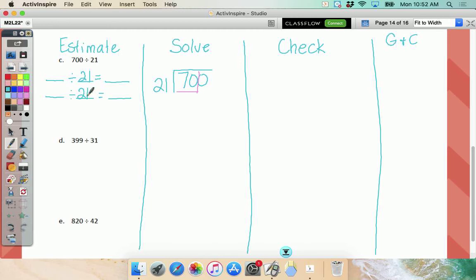I know I'm going to need two of these. You know how I know it? Because I put a box around the first two numbers, so I know I'm bringing the zero down. So I'm going to skip count by 21s. 21, 42, 63. I'm going to stop there because I don't have any more room.